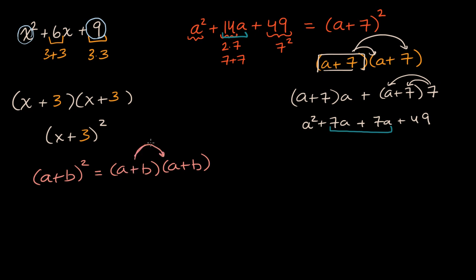If we distribute this, it's going to be a plus b times that a, plus a plus b times that b. And so this is going to be a squared, now I'm just doing the distributive property again, a squared plus ab plus ab plus b squared. So it's a squared plus two ab plus b squared.